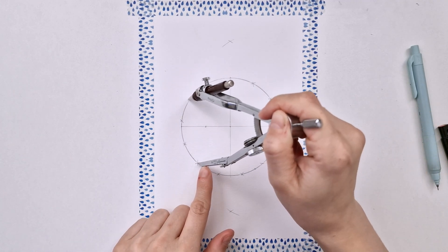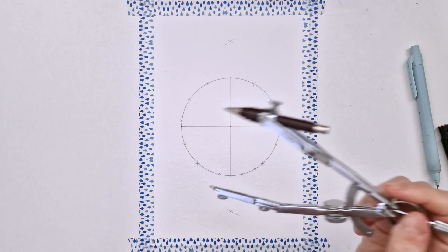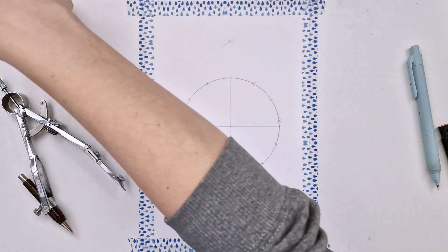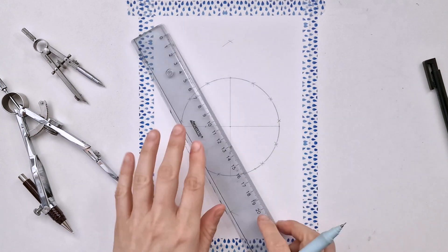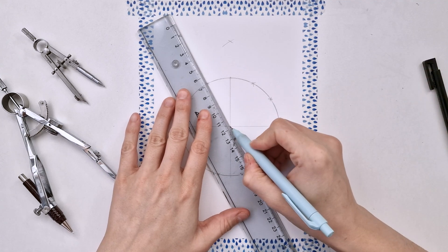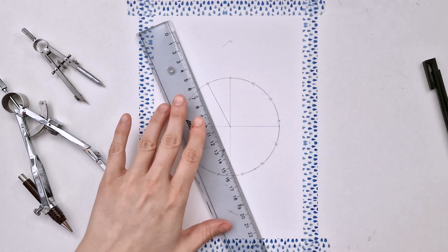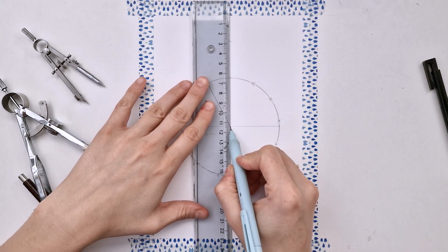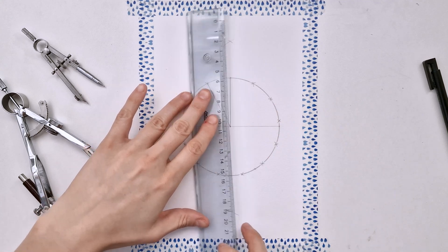At the end of this, you should have 13 crosses on your circle, which are the intersections you will use to connect to the center point and divide your circle into 13 equal parts.